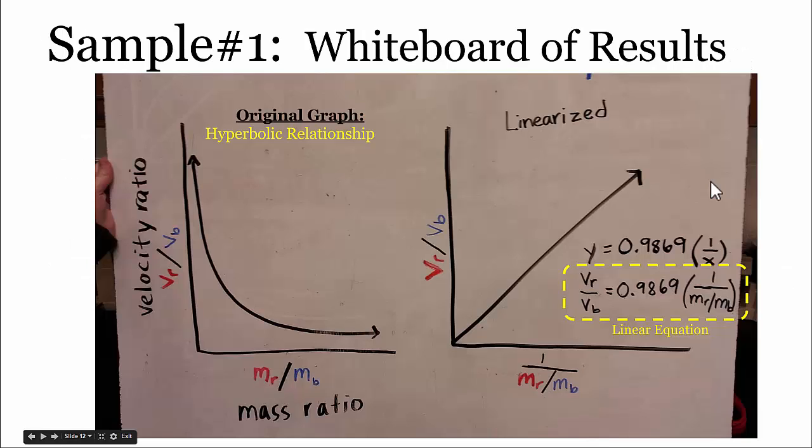Here's an example of one of the whiteboards. When this group graphed the mass ratio, the ratio of the red mass to the blue mass, versus the velocity ratio of the red velocity to the blue velocity, they found out as the mass ratio increased, the velocity ratio decreased.